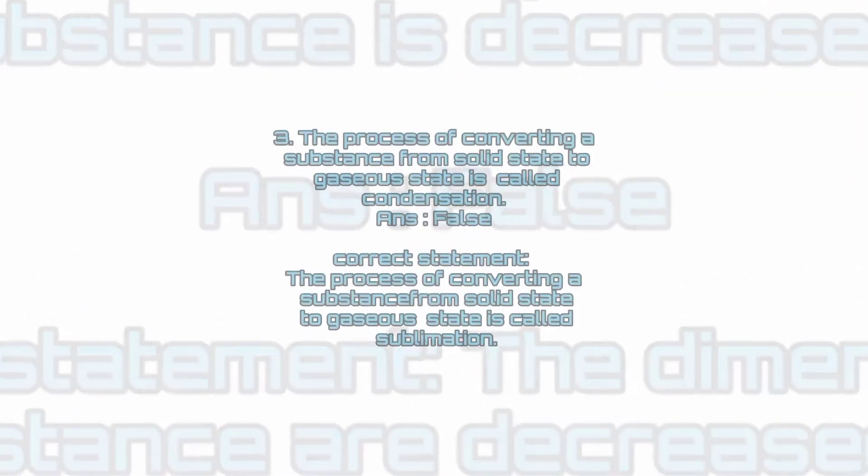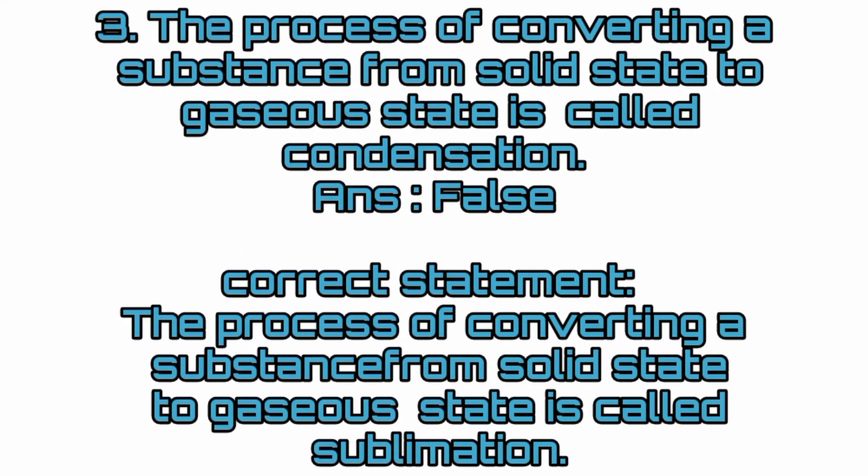Question 3: The process of converting a substance from solid state to gaseous state is called condensation. Answer: False. The correct statement is: the process of converting a substance from solid state to gaseous state is called sublimation.